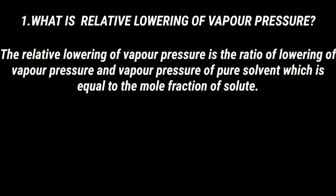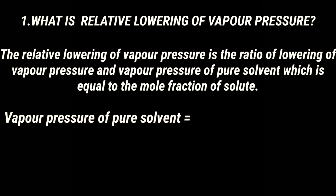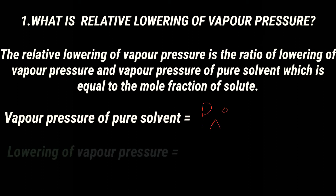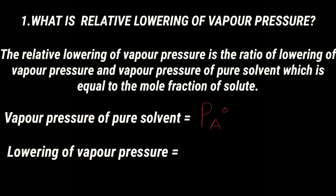The relative lowering of vapor pressure is the ratio of lowering of vapor pressure to the vapor pressure of the pure solvent, which is equal to the mole fraction of solute. Vapor pressure of pure solvent equals P_a°; lowering of vapor pressure equals P_a° minus P_a. According to the definition, relative lowering of vapor pressure is (P_a° − P_a) / P_a°.